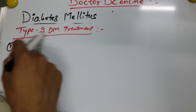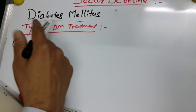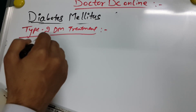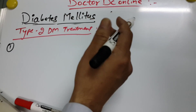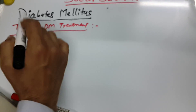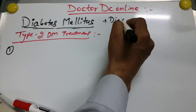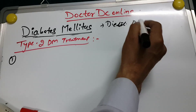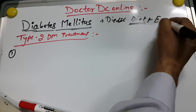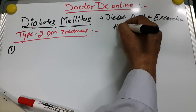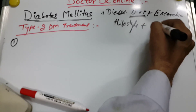We are discussing Type 2 Diabetes Mellitus treatment. In Type 2 diabetes, there is insulin production but insensitivity to insulin action. To manage it, we need to control diet — avoiding fatty foods — do exercise, change lifestyle, and use oral medications.